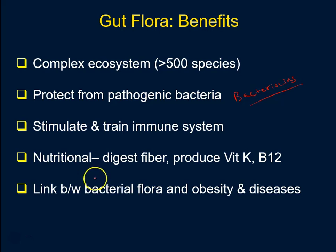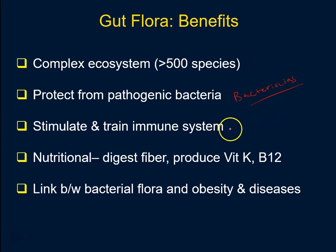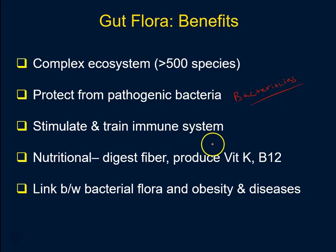Another major function we're just beginning to understand is that the gut flora stimulates and trains our immune system. When we're born, our immune system is pretty naive and doesn't really understand what's friendly and what's not. This bacteria actually helps train our immune system, and it turns out that protects us from certain autoimmune diseases. Research suggests that if we don't have the right flora from birth, and if that ecosystem is skewed in any way, it creates a potential for autoimmune disorders later on.